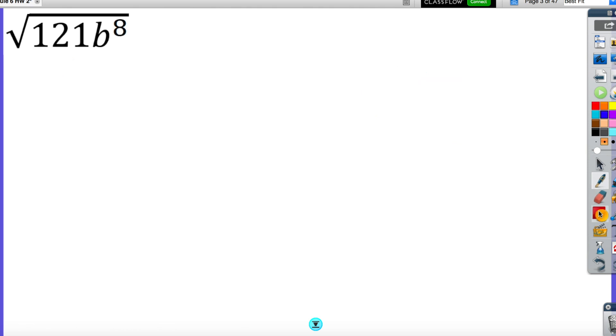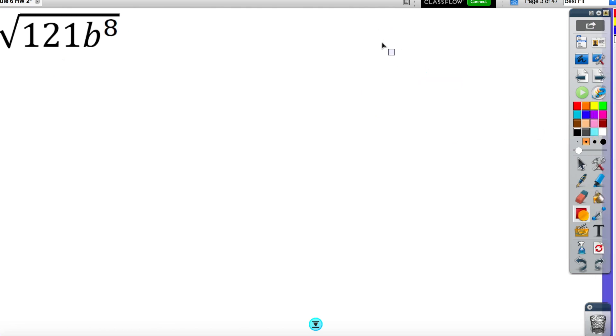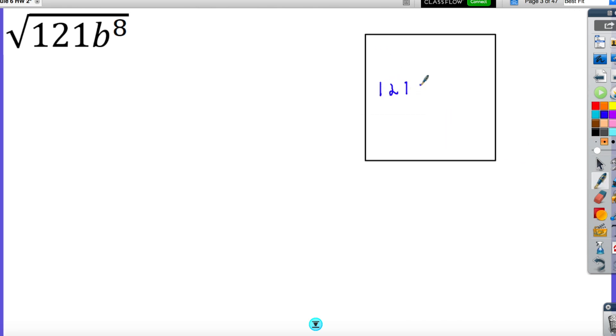Now we're going to look at this with variables. I have 121 b to the 8th as my area, and I need to figure out what are my side lengths. Two numbers that multiply to 121, that is a perfect square. So two sides are 11. 11 times 11 is 121. Now the tricky part is the b to the 8th. If we just looked at b to the 8th, remember we're looking for pairs, and there would be 8 of them in here.